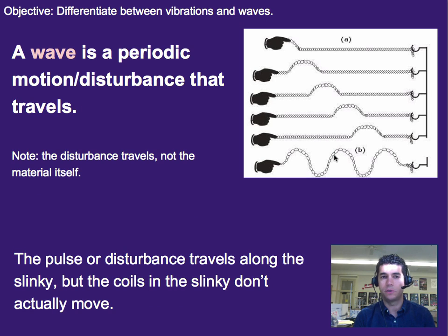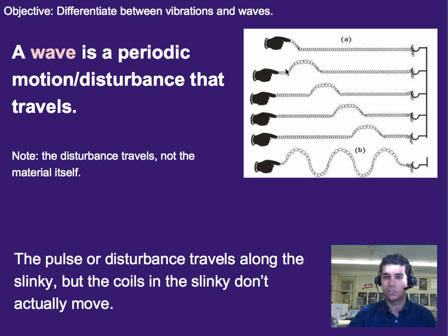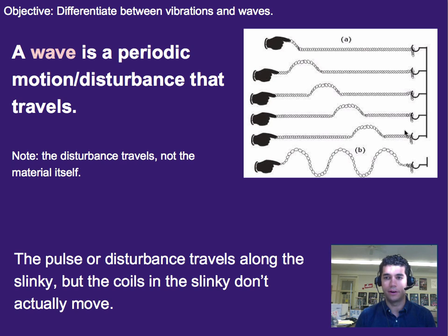A wave, on the other hand, is a periodic motion or disturbance that travels. So if we have the pulse of somebody making a disturbance in a slinky coil, we can see that that pulse physically travels down the slinky. It starts at one end, and then a half second later it's further, and further still. So the pulse or disturbance or energy is physically traveling — going from one area to another, meaning it doesn't end up in the same spot that it started.